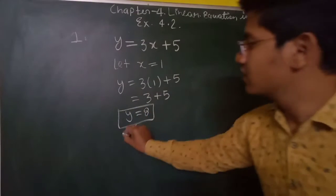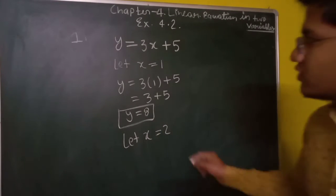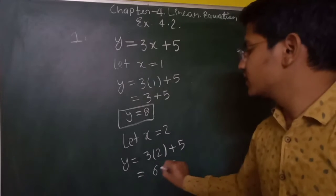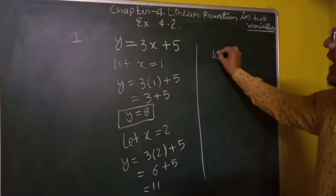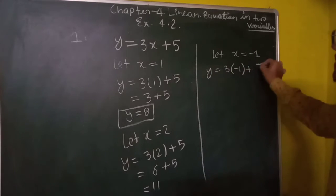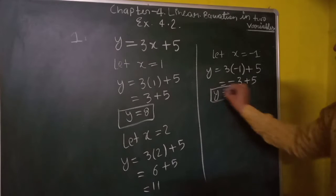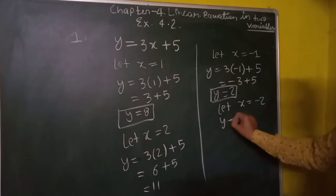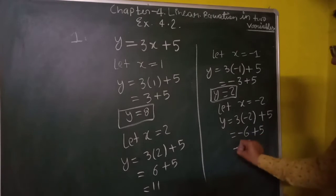Now let x equal to 2. So y will be equal to 3 into 2 plus 5, that is 6 plus 5, which equals 11. Now let x equal to minus 1. So y will be equal to 3 into minus 1 plus 5, that is minus 3 plus 5, which equals 2. Let x equal to minus 2. So y is equal to 3 into minus 2 plus 5, that is minus 6 plus 5, which equals minus 1.